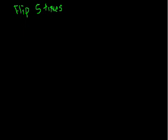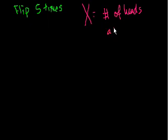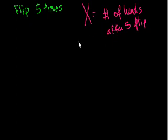Let's say I have a coin, and it's a fair coin, and I'm going to flip it five times. I'm going to define my random variable X as the number of heads I get after five flips. Maybe I have five coins and flip them all at once and count the heads, or I could have one coin and flip it five times. A random variable is a little different than a regular variable — it's more of a function. It assigns a number to an experiment.